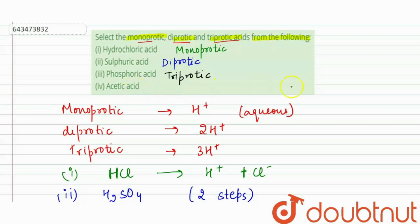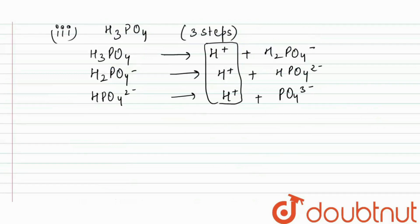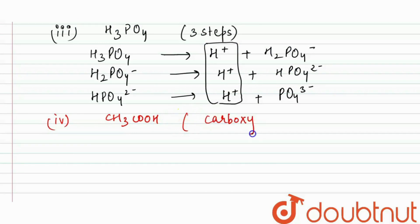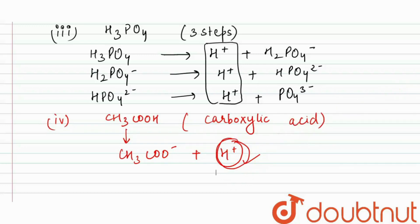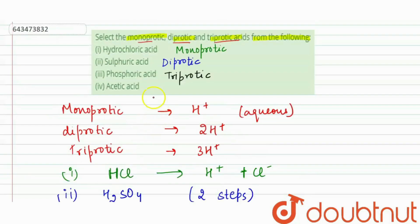Last is acetic acid, with formula CH₃COOH. It is a weak carboxylic acid. In aqueous solution, it dissociates partially and gives CH₃COO⁻ + H⁺ — only one hydrogen proton. So acetic acid is monoprotic.